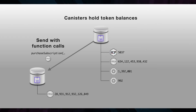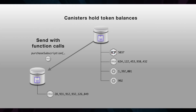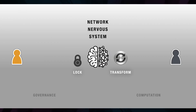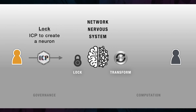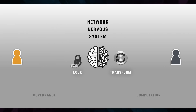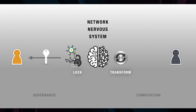On the Internet Computer, tokens can be used for anything, from loyalty rewards, through payments, the securitization of assets, and the governance of open Internet services. You can do two things with ICP tokens. Firstly, by locking them inside the Network Nervous System — the algorithmic, in-protocol governance system that manages the network — you can create neurons, which can vote on proposals and earn voting rewards, also paid in ICP.